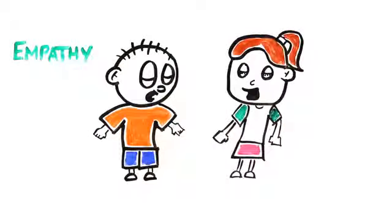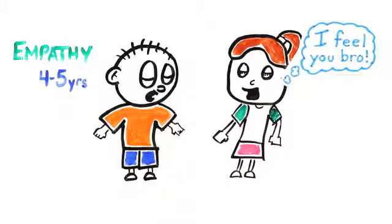Contagious yawning begins in children around the age of 4-5, and this is when empathetic behavior, along with the ability to identify emotions, begins to develop.